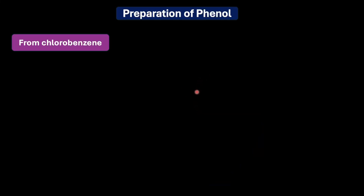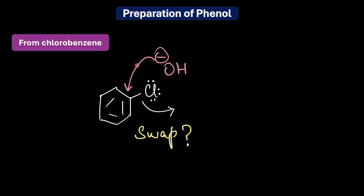First up — haloarenes like chlorobenzene. It sounds simple: just swap the chlorine with an OH group, right? Well, not quite. Unlike swapping a halogen on a simple carbon chain, doing it on a benzene ring is an incredible challenge. Chlorobenzene and haloarenes in general are highly unreactive when it comes to simple substitution reactions. The chlorine is directly attached to the aromatic ring, which is already electron rich and will resist attack by any incoming nucleophile like OH⁻.